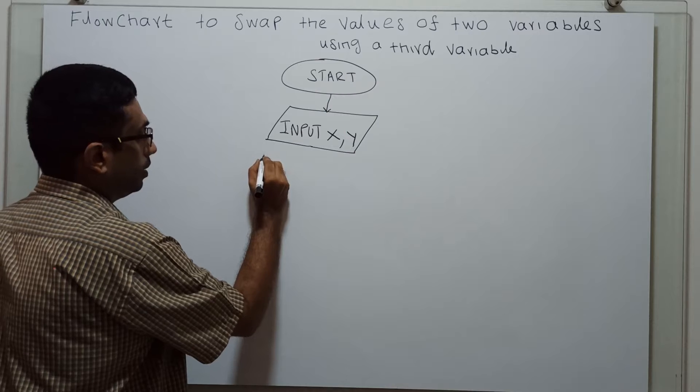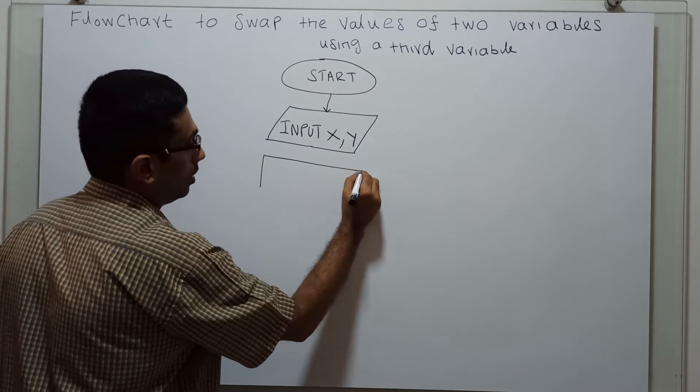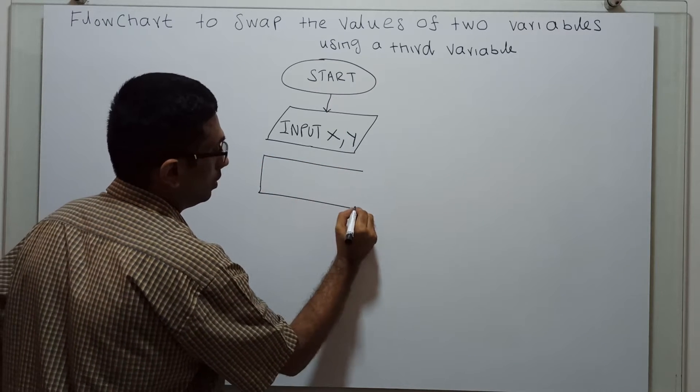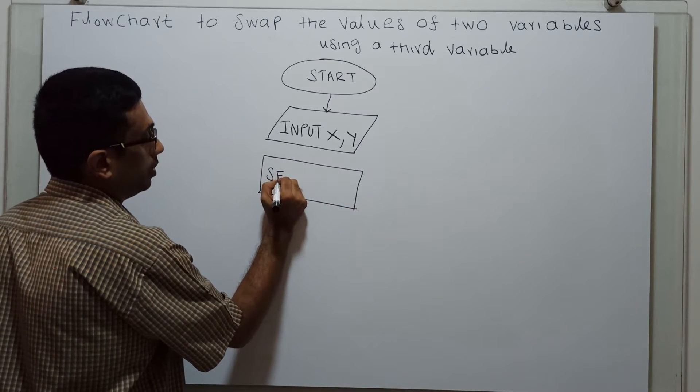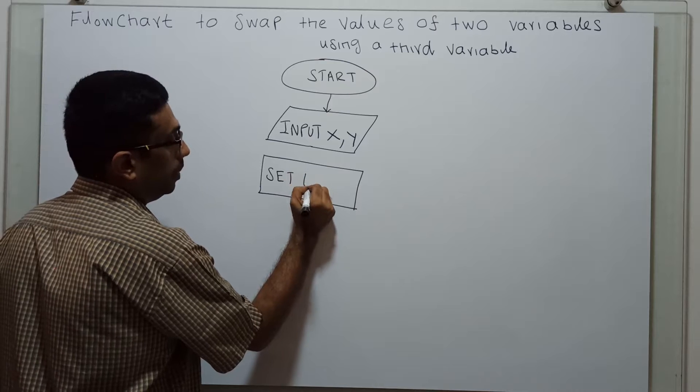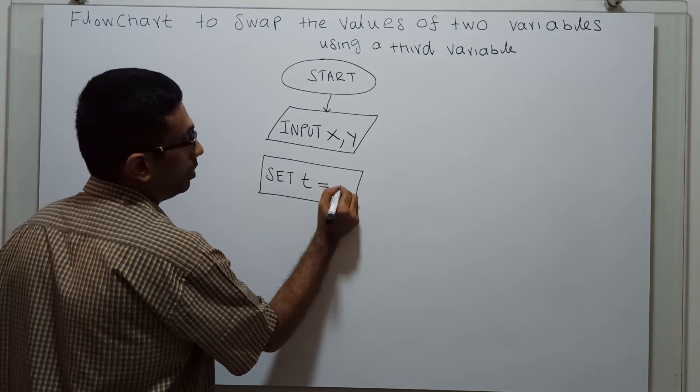Now, I am initializing the variable. Set variable t equal to 0. This is the third variable which is equal to 0.